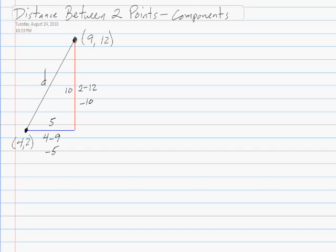To find the distance between the two points, we use the distance formula. d squared equals 5 squared plus 10 squared. So d squared then is equal to 25 plus 100.